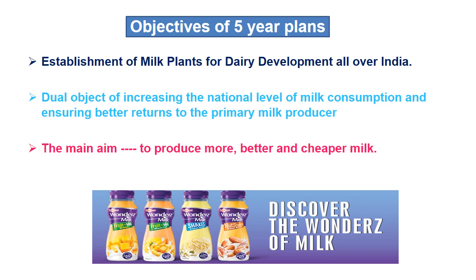The major objectives of the Five Year Plans were: firstly, the establishment of milk plants or dairy plants for dairy development all over India; secondly, a dual objective of increasing the national level of milk consumption and ensuring better returns to the primary milk producer — since milk consumption was very less, it needed to increase nationally, and dairy farmers needed better income. Overall the main objective was to produce more milk, better milk, and cheaper milk.